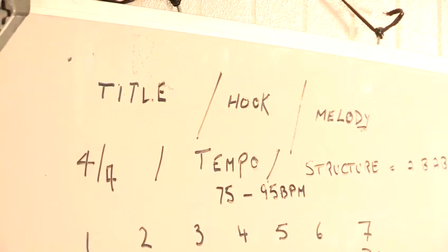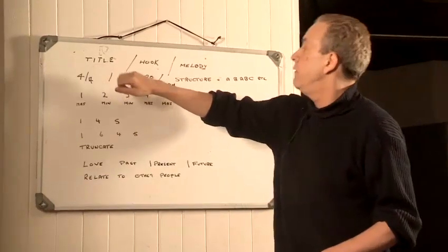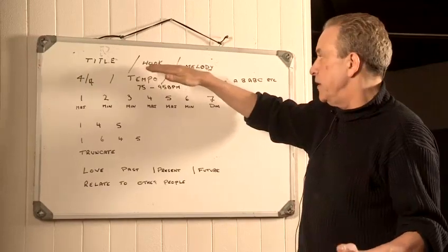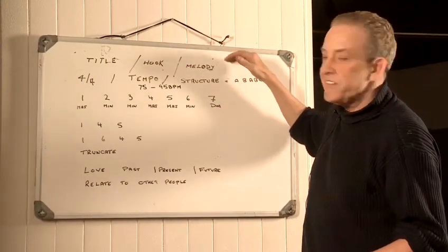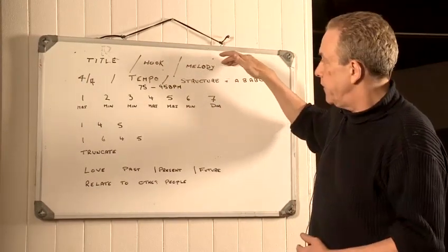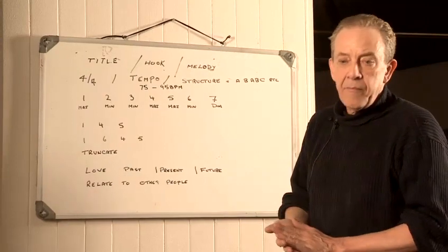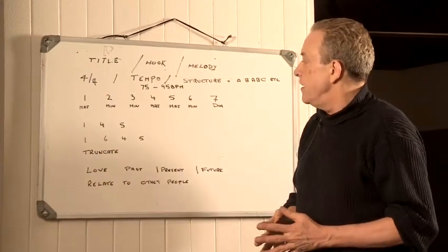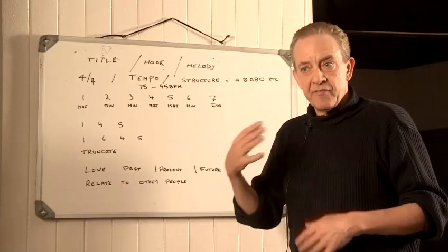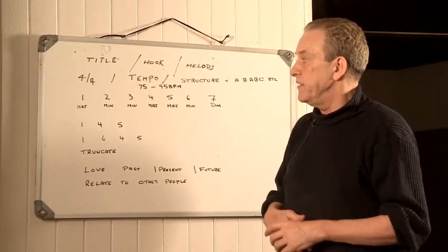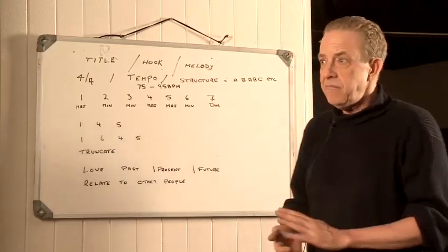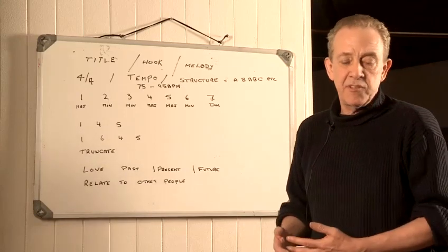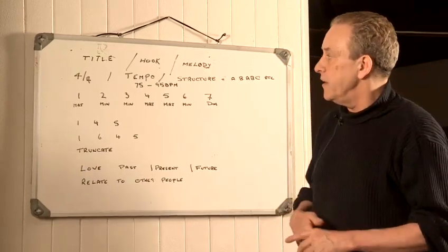First of all we deal with having a title, and of course the hook — which everybody knows about — which is the big chorus. But the most important thing is the melody. In ballads, especially love ballads, it's very very important that that melody has some sort of movement, romantic movement in it, which will happen in lots of ways by the chord sequence we use and the movement of the melody.